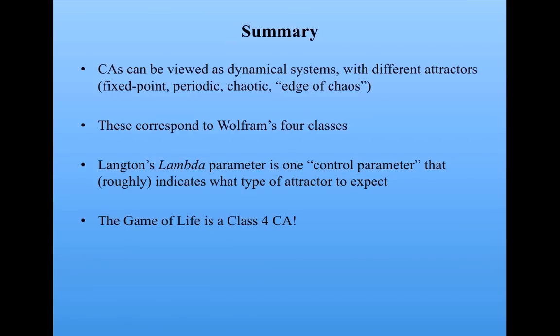The game of life is a class four cellular automaton. It has all the properties that Wolfram listed for class four cellular automaton. Wolfram hypothesized that class four cellular automata are capable of universal computation, which is something that I will talk about in the next subunit.